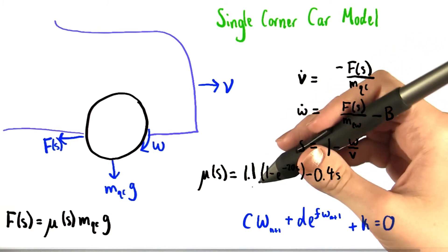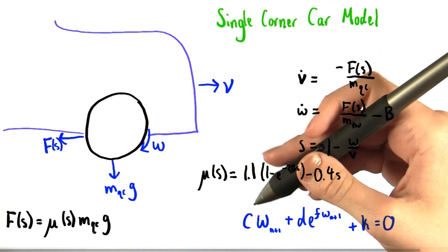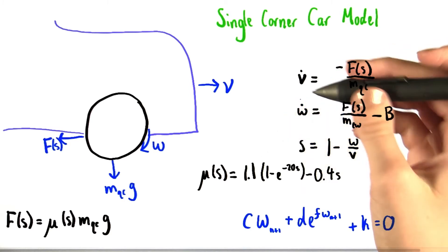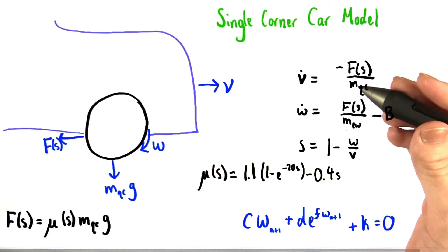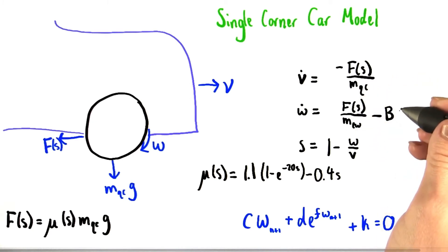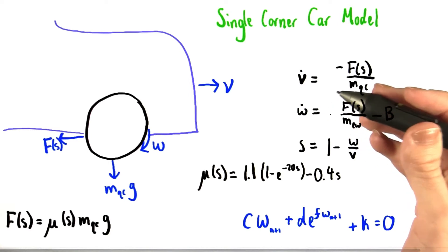For example, they might depend on W sub n, on H the time step, on the mass of the quarter of the car, on the effective mass of the wheel MEW right here, on G the acceleration due to gravity, on B the braking acceleration, or on V the velocity.